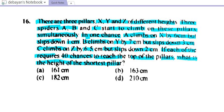Let's repeat the question once again. There are three pillars X, Y and Z of different heights. Three spiders A, B and C start to climb on these pillars simultaneously. In one chance, A climbs on X by 6 cm but slips down 1 cm. B climbs on Y by 7 cm but slips down 3 cm. And C climbs on Z by 6.5 cm but slips down 2 cm. If each of them requires 40 chances to reach the top, what is the height of the shortest pillar?